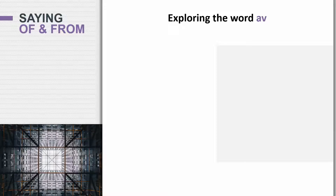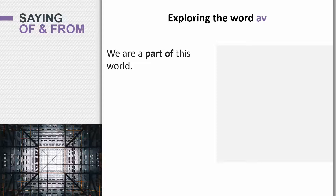So let's look at the word 'of' — the Swedish word av. Av means 'of,' but it can mean other things as well. For now let's look at its meaning as 'of.' So how would you say 'we are a part of this world' if 'part' is del and 'of' is av? Del av.